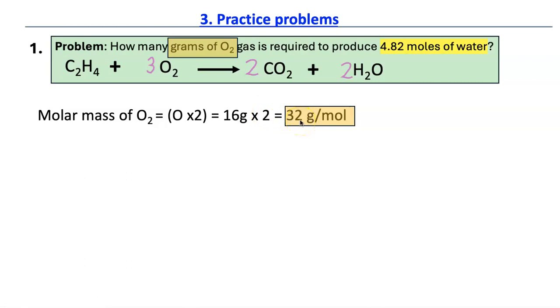That means one mole of oxygen molecules will have 32 grams of mass. And then you're going to start with the given value, which is this one. And then you're going to multiply it by a factor and you're going to put moles of H2O at the bottom. And then since you have to go to moles of the other thing, just like before, you're going to put the moles of oxygen on top.